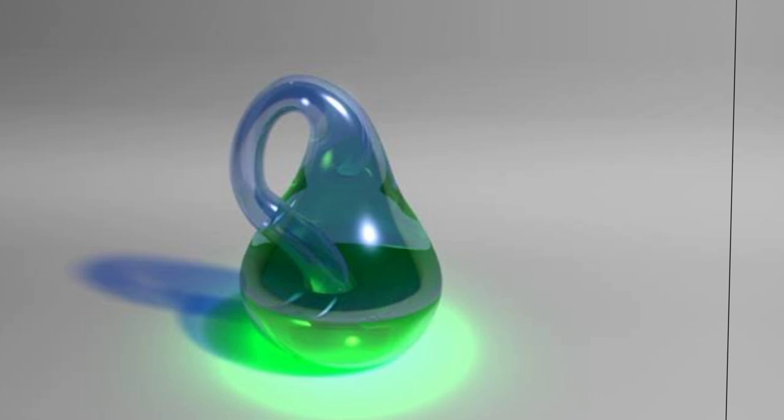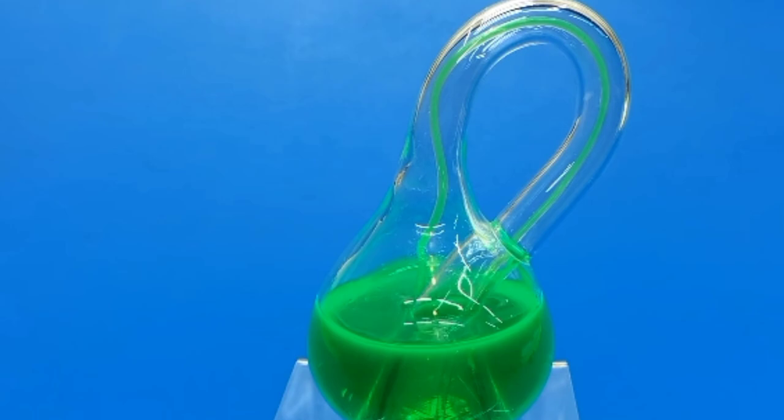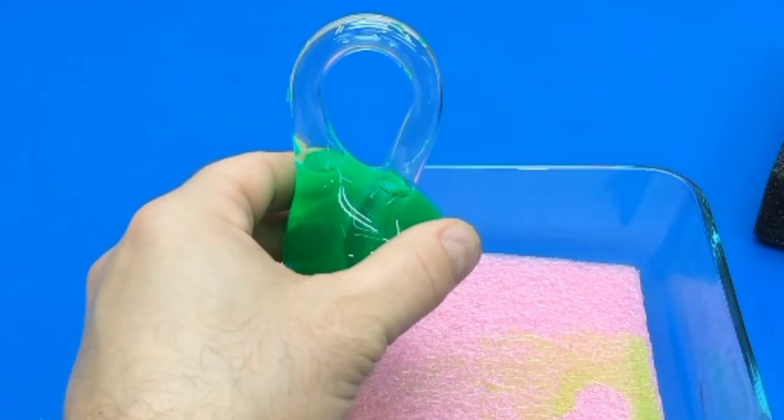Now, let's get back to the Klein Bottle. Due to its non-orientability, the Klein Bottle has some remarkable properties. For example, if you were an ant crawling on the surface of a Klein Bottle, you could travel from the inside to the outside without crossing any boundaries.